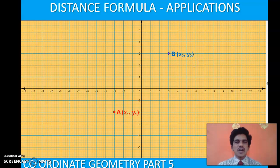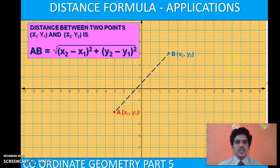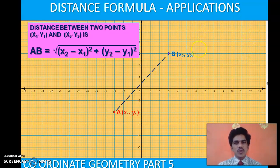Now we will apply this formula to the case of quadrilaterals. Before going to that, let us once again recapitulate the distance formula. Suppose you have two points A(x1, y1) and B(x2, y2) in the coordinate plane and you want to calculate the distance between them. The formula is: square root of (x2 minus x1) whole square plus (y2 minus y1) whole square. You calculate the difference of the x-coordinates and y-coordinates, find their squares, add them, and take the square root.